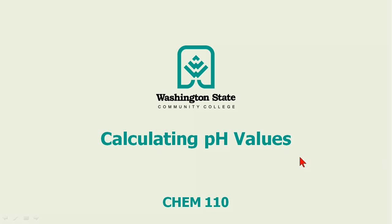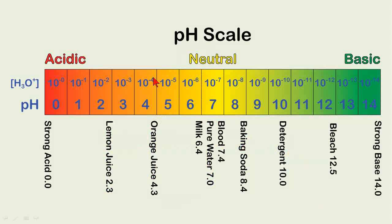This screencast is on calculating pH values. The pH scale ranges from 0, which is acidic and represented in red, to a value of 14, which is in green and considered basic.